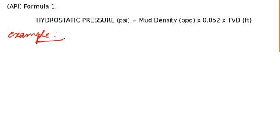Example: let's say you are drilling a vertical well with a mud density of 12 PPG, pounds per gallon. You have to find hydrostatic pressure at TVD. If it's a vertical well, TVD and measured depth MD are the same.